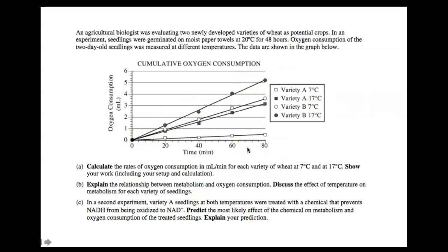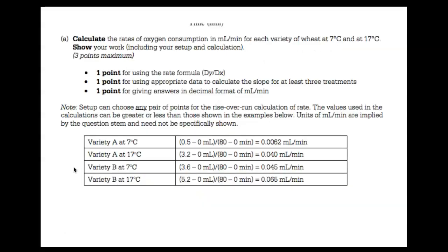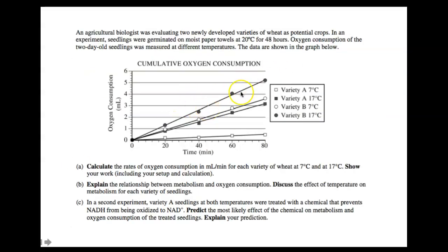If you know this is tied to cellular respiration, you know as oxygen consumption increases, the rate of cellular respiration is also increasing. Part A wants you to calculate the rate of oxygen consumption in milliliters per minute of each variety of wheat at 7 and 17. Show your work. So what you would have here is four answers, and these would be the answers. If you want to pause there and check your work, you're doing rise over run, you're just calculating slope. So if you know how to do rise over run, calculate slope, you know how to calculate rate.